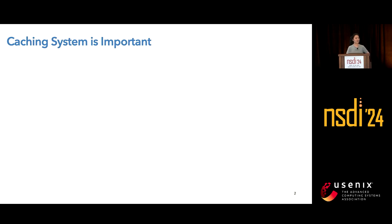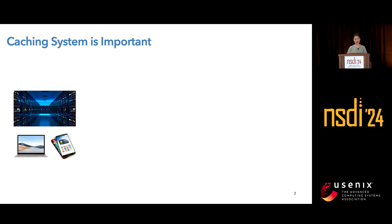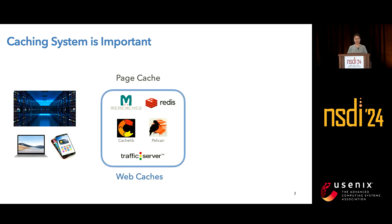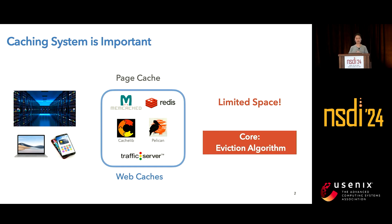Web caches are very essential components of modern internet infrastructure. Caches are everywhere, and they are deployed in data centers, laptops, mobile phones, and browsers. There are different types of caches, like page cache and various web caches. In the past decade, an increasing number of web caches are deployed. Also, caches usually have very limited space to store objects, so the core of cache performance is the eviction algorithm. It decides which object to be evicted from the cache when it is full.